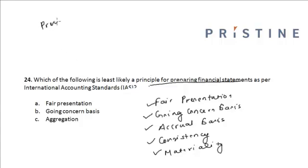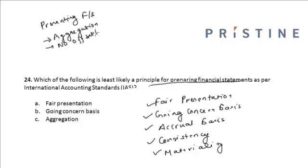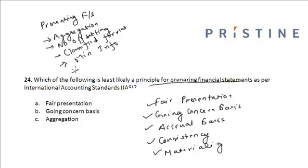There are also principles for presenting financial statements, and these include aggregation, no offsetting, presentation of the balance sheet in a classified format, a requirement for minimum information on the face of each financial statement and in the notes, and comparative information for the prior period should be included unless specific standards state otherwise.